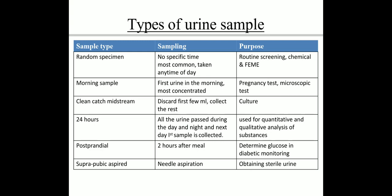Third is clean catch midstream: we discard the first few milliliters and collect the rest, done for urine culture. Fourth is the 24-hour specimen, where all urine passed during the day, night, and the first sample of the next day is collected; it is used for quantitative and qualitative analysis of substances. Fifth is postprandial, taken two hours after a meal, used to monitor glucose in diabetic conditions.